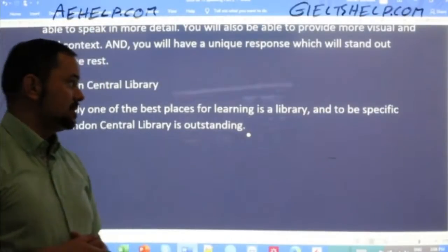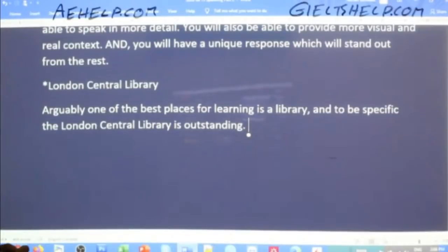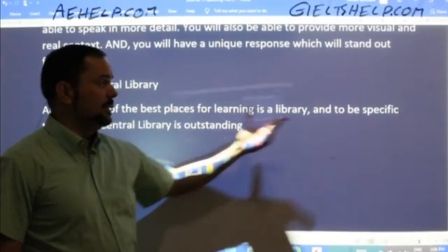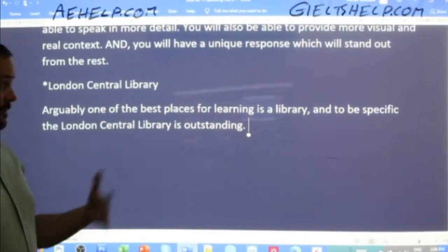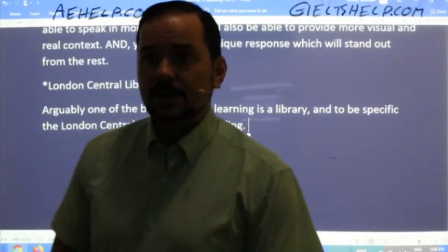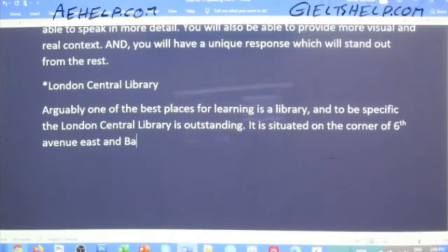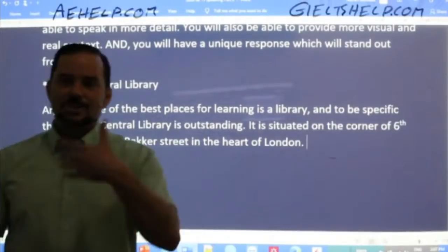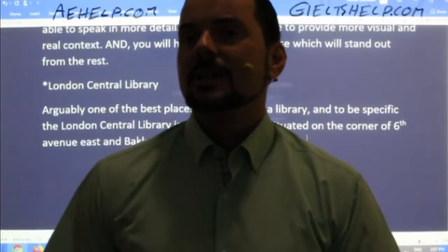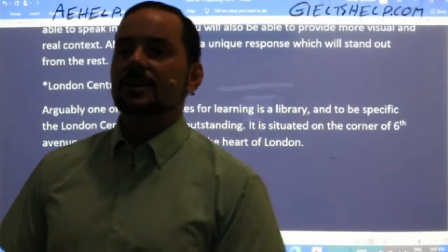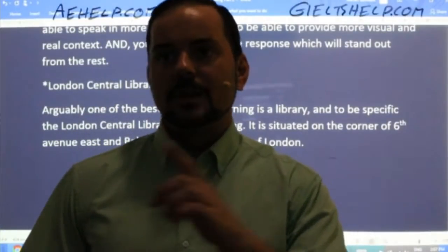The IELTS examiner says: 'your one minute preparation time is up, please begin speaking.' And you start: 'Arguably one of the best places for learning is a library, and to be specific, the London Central Library is outstanding for this purpose.' Rajveer says: 'it is situated on the corner of 6th Avenue East and Baker Street in the heart of London.' Don't repeat the word London twice though — otherwise very good. Ferdav says it is located near Buckingham Palace, 500 meters to the east on Manchester Street 18.